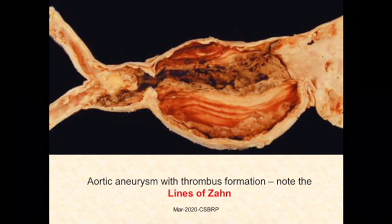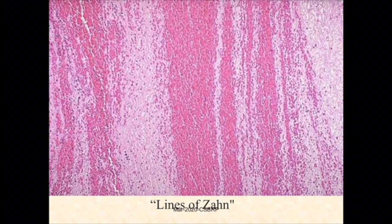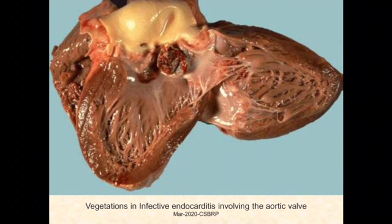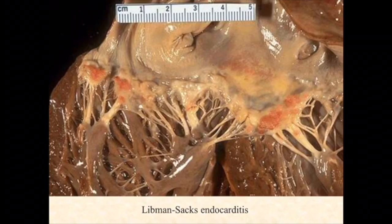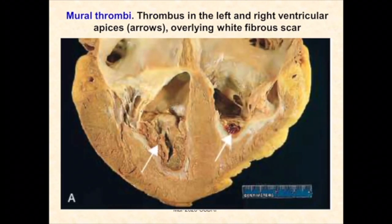An aortic aneurysm specimen shows an abnormally dilated abdominal aorta with a thinned-out wall; within the lumen there is a clot showing alternating layers of pale and red areas known as lines of Zahn. Microscopically, the red areas represent RBCs and the pale areas represent platelets and fibrin. A case of infective endocarditis shows large vegetations on the aortic wall, and a case of Libman-Sacks endocarditis shows small vegetations along the lines of closure — both are examples of thrombus formation. A cut surface of the ventricles shows mural thrombi within the lumen, with a whitish fibrous scar underneath.